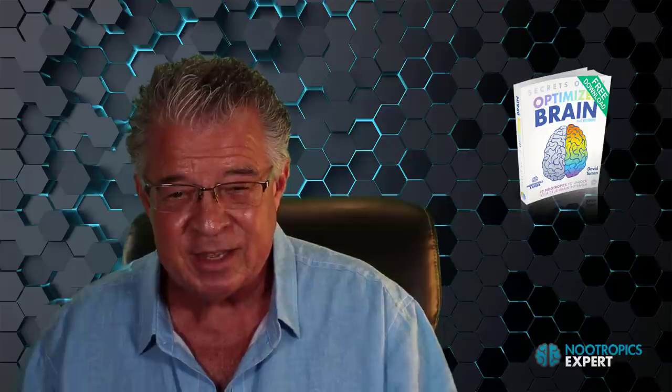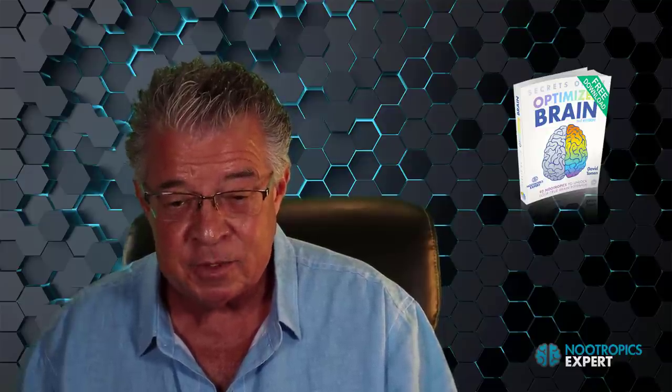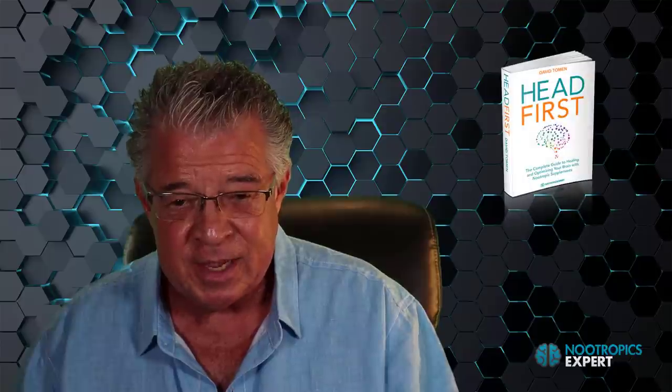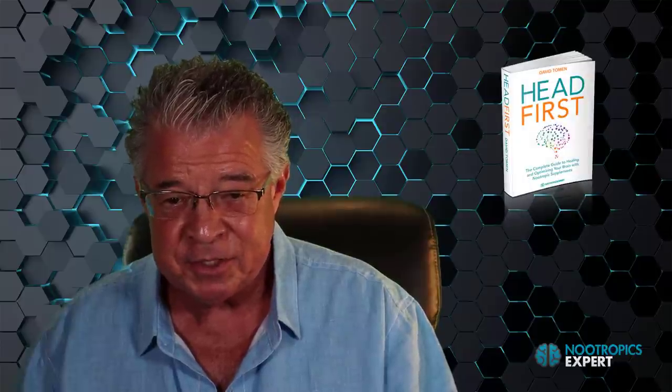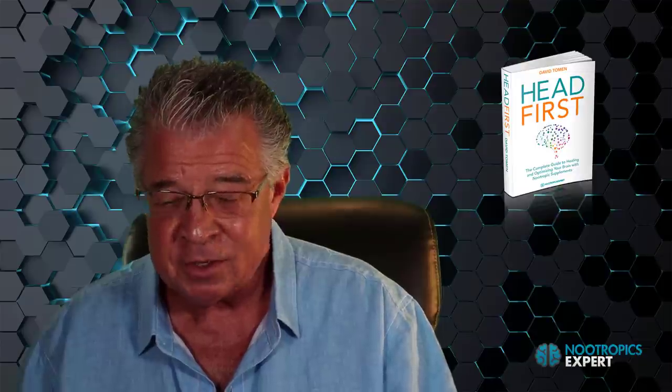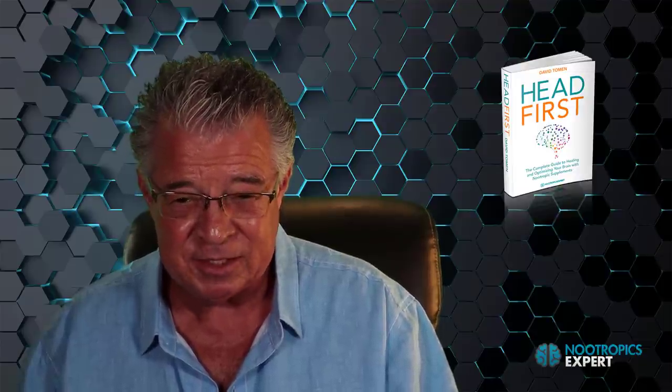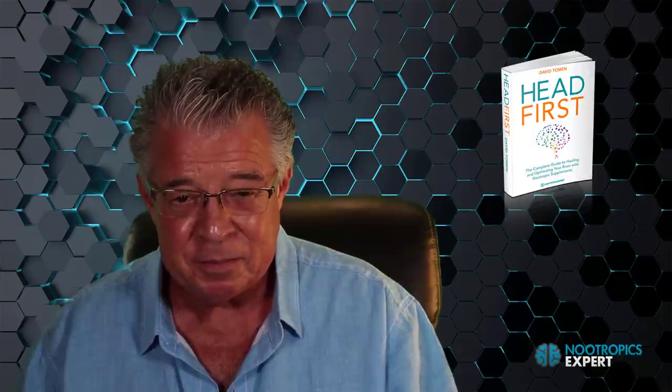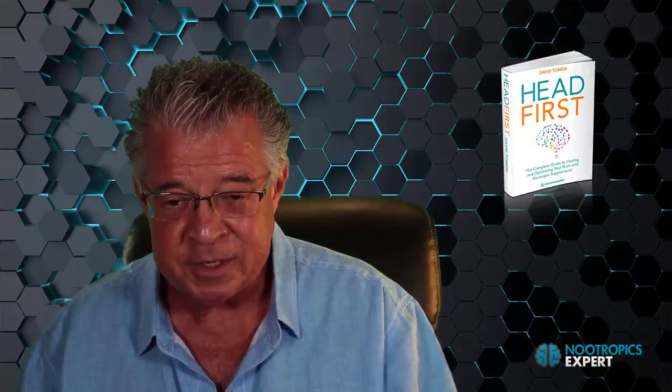If you haven't already, download your free copy of Secrets of the Optimized Brain. It's nearly 100 pages and contains details on 92 of the most popular nootropics used today. And consider getting a copy of my book Head First, the complete guide to healing and optimizing your brain with nootropic supplements. Head First is only $37 and it's nearly 600 pages and the best guide on the planet for fixing and optimizing your brain. You'll find a link below this video for the book.